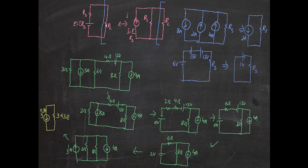Ignore the RL resistor first. When the circuit has one resistor RS and one voltage source, you can convert it into a format with a current source and the resistor. The current value is found by I = V/R, that is, E/RS gives you the current. The direction of the current follows the direction of the voltage source.